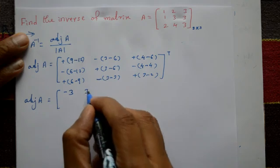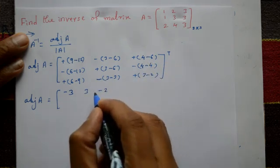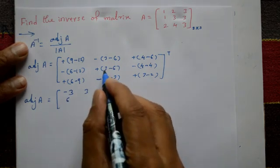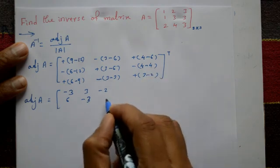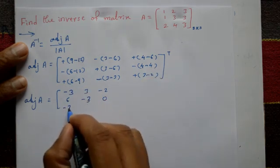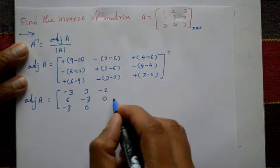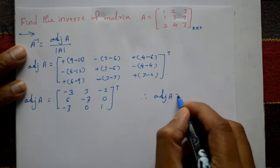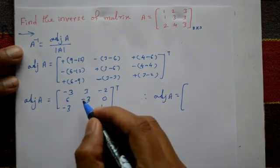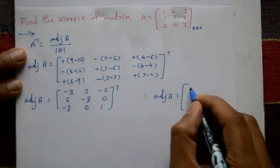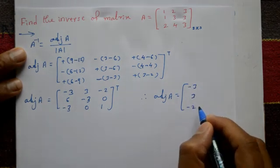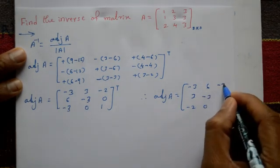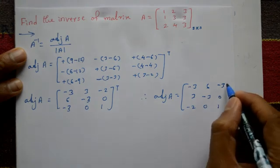The adjoint of A after transpose: the values are minus three, three, minus three, minus two, and plus six. Elements include minus three, minus three, zero, minus three, and zero and one. Therefore, adjoint of A equals — shifting row into column — first column: minus three, three, minus three; second column: minus two, six, minus three, zero; third column: minus three, zero, one.